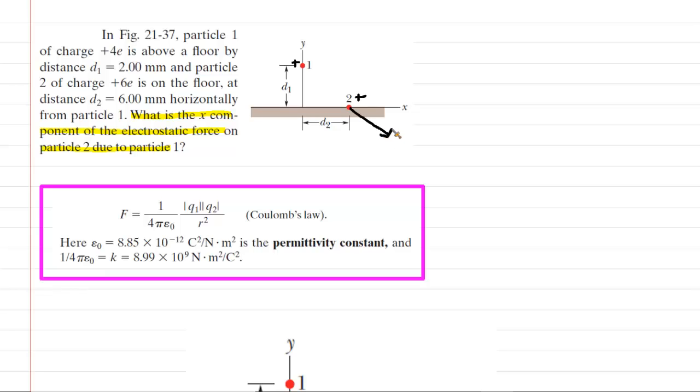And the direction of that force would be sort of this way. What you want to do is extend a line from 1 to 2 like that, and then the repulsive force will follow the extent of that line.